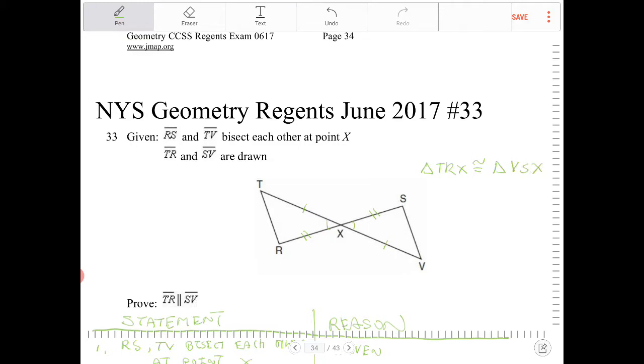And as a result of that, we can then conclude that these angles are going to be congruent because R corresponds with S based on CPCTC. And because those two angles are congruent and they happen to be alternate interior angles, we can then conclude that TR and SV are going to be parallel because alternate interior angles converse.